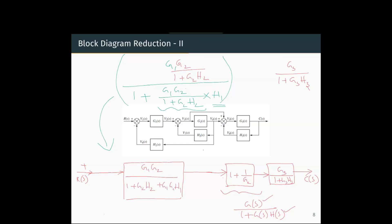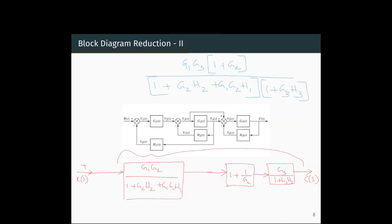All three blocks are in series and we multiply them to get the final reduced transfer function. After multiplying and simplifying, we get the reduced block between R(S) and C(S) as G1·G3 multiplied by (1 plus G2) divided by (1 plus G2·H2 plus G1·G2·H1) times (1 plus G3·H3).